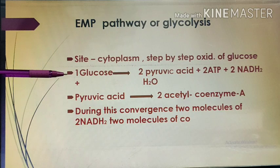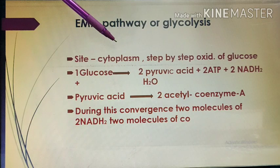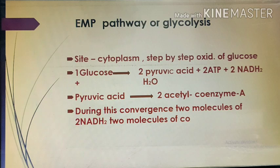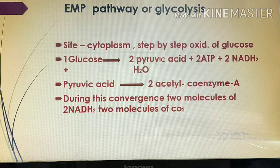This is the glucose molecule. It breaks down into two pyruvic acid molecules, yielding two ATP and two NADH2 along with a water molecule. One glucose molecule is oxidized to give two pyruvic acid plus two ATP plus two NADH2 along with water. The pyruvic acid then converts into acetyl coenzyme A — one pyruvic acid molecule gives two acetyl coenzyme A — and during this conversion, two molecules of NADH2 and two molecules of carbon dioxide are formed.